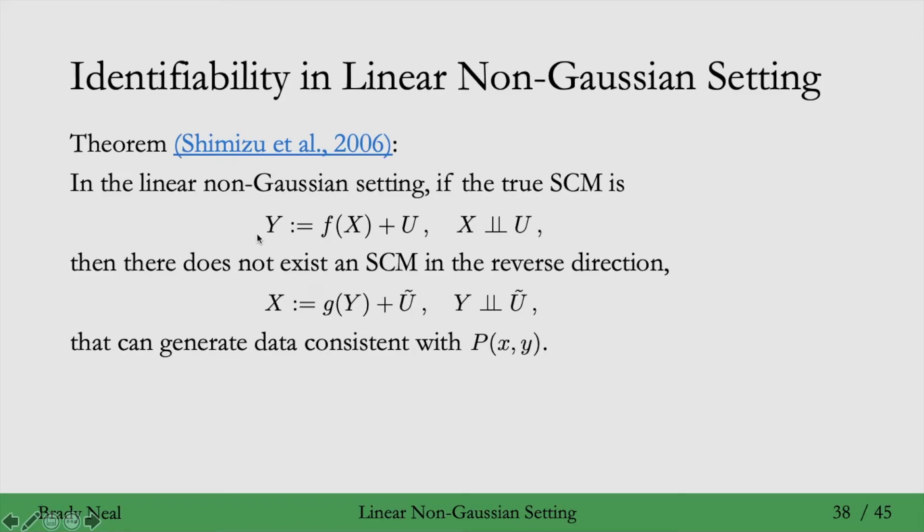Of course, there exists an SCM in the true direction that can generate data consistent with the observational distribution, but in the linear non-Gaussian setting, there doesn't exist an SCM in the reverse direction for generating that observational distribution. Because there doesn't exist an SCM in the reverse direction, we are able to identify the direction of this edge. We won't cover the proof in this lecture, but you can see the proof in the course book.